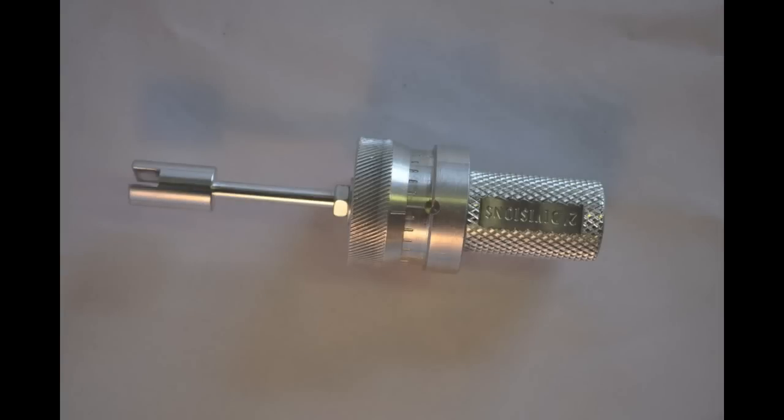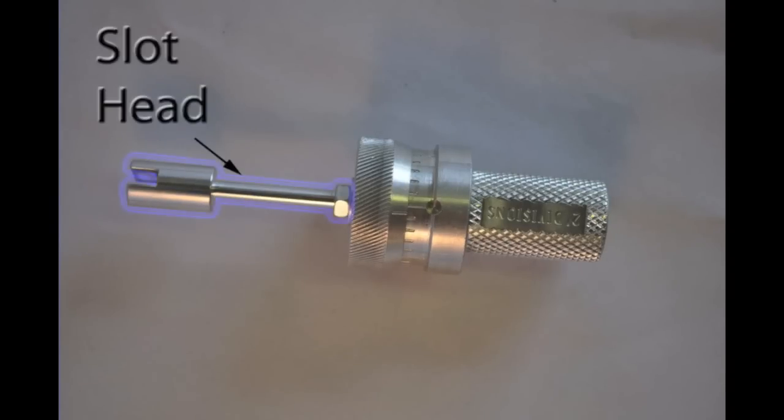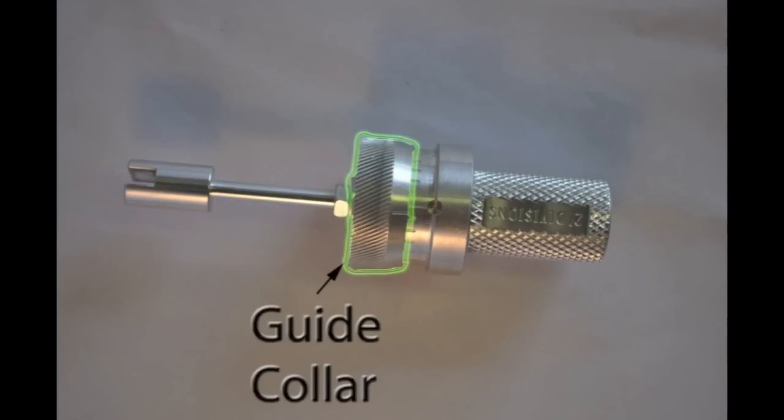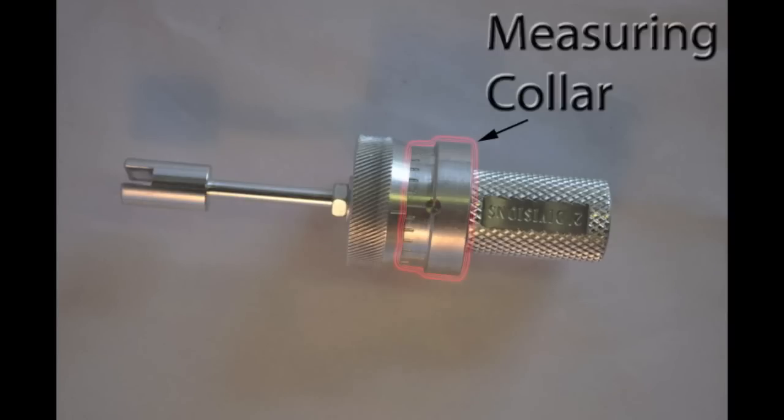The quickjet has four main parts: the slot head, the guide collar, the measuring collar, and the handle.